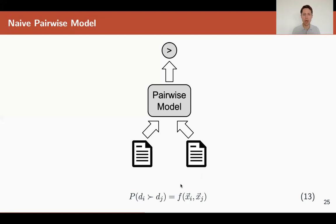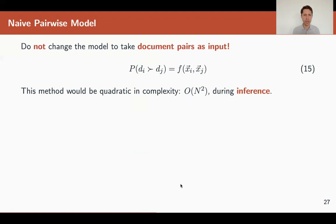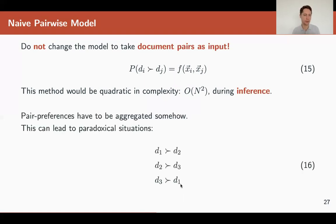However, this naive approach doesn't really work for a simple reason. During inference, when you need to rank documents, you need to perform N squared operations because you have to compare all pairs of documents. The quadratic complexity during learning is okay, but during inference is not. Another problem is you can get paradoxical situations where d1 is greater than d2, d2 is greater than d3, but d3 is greater than d1.